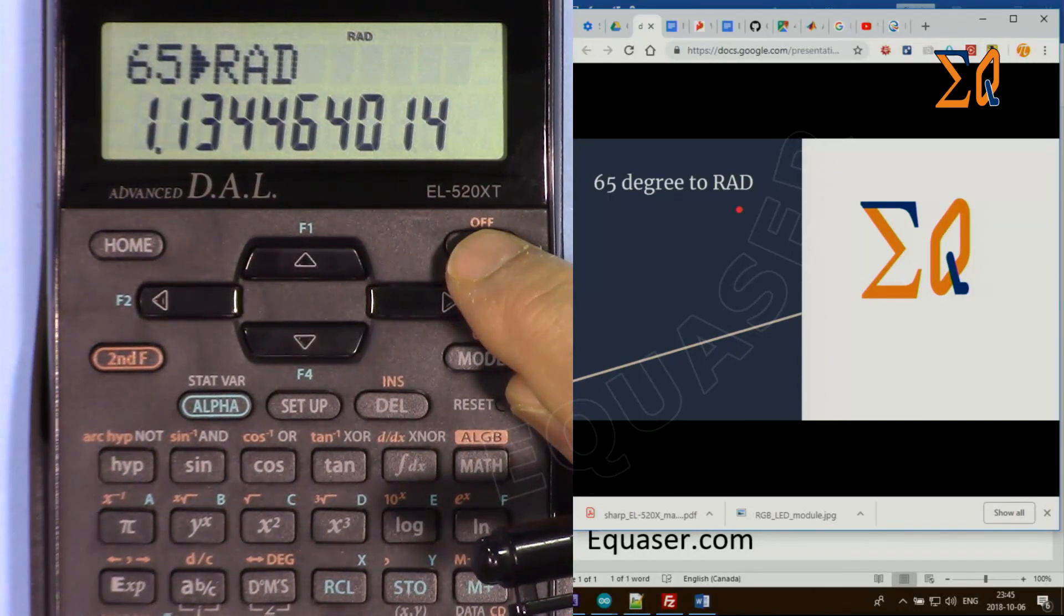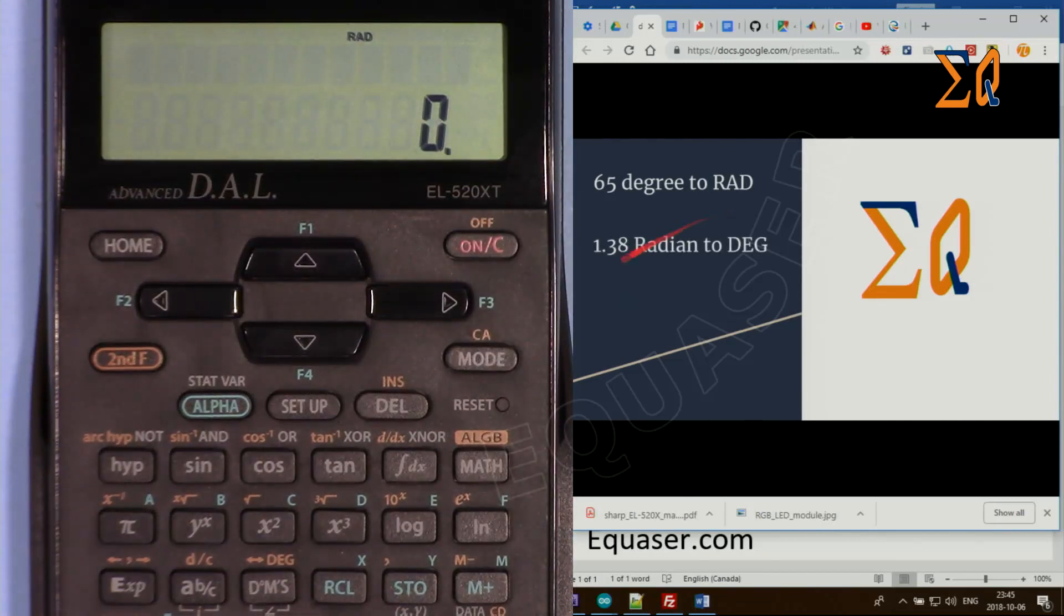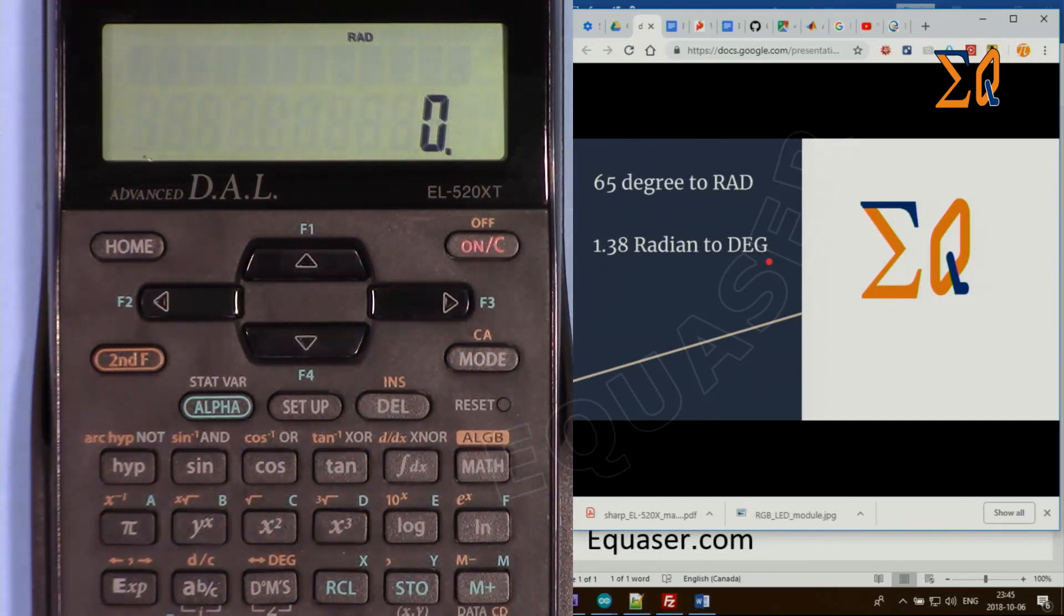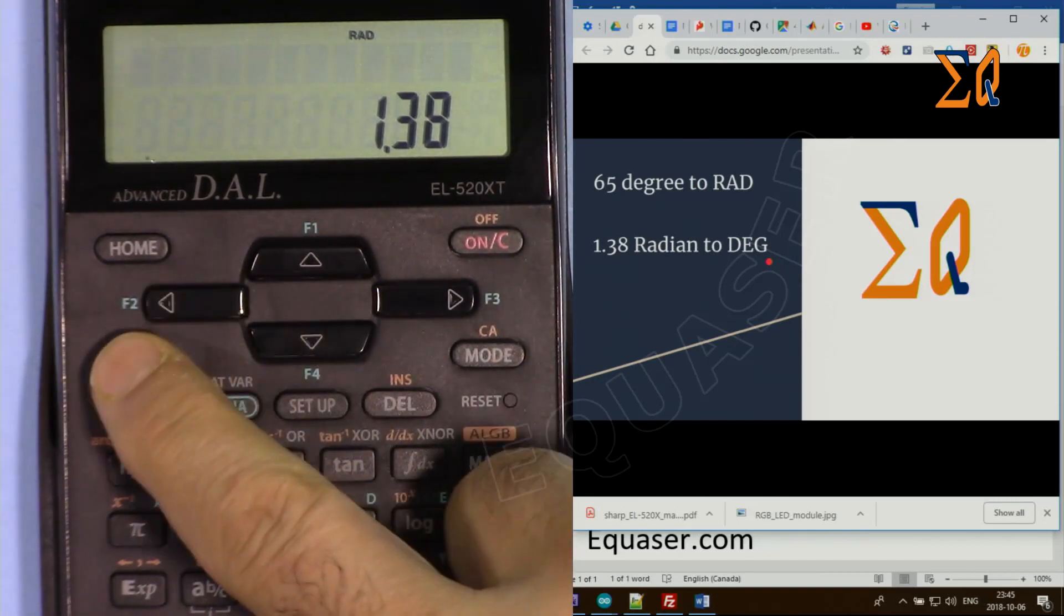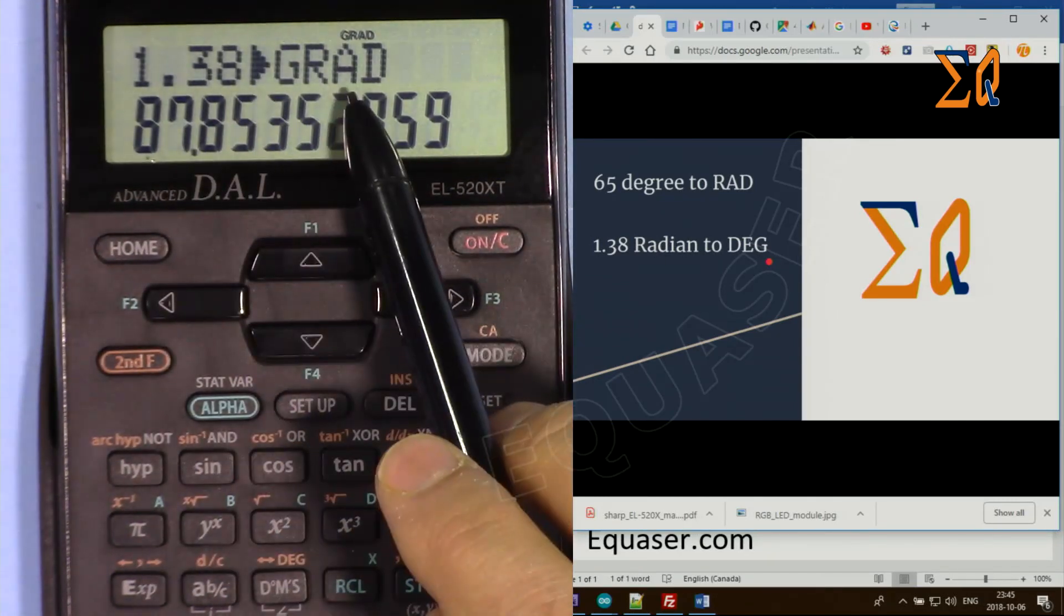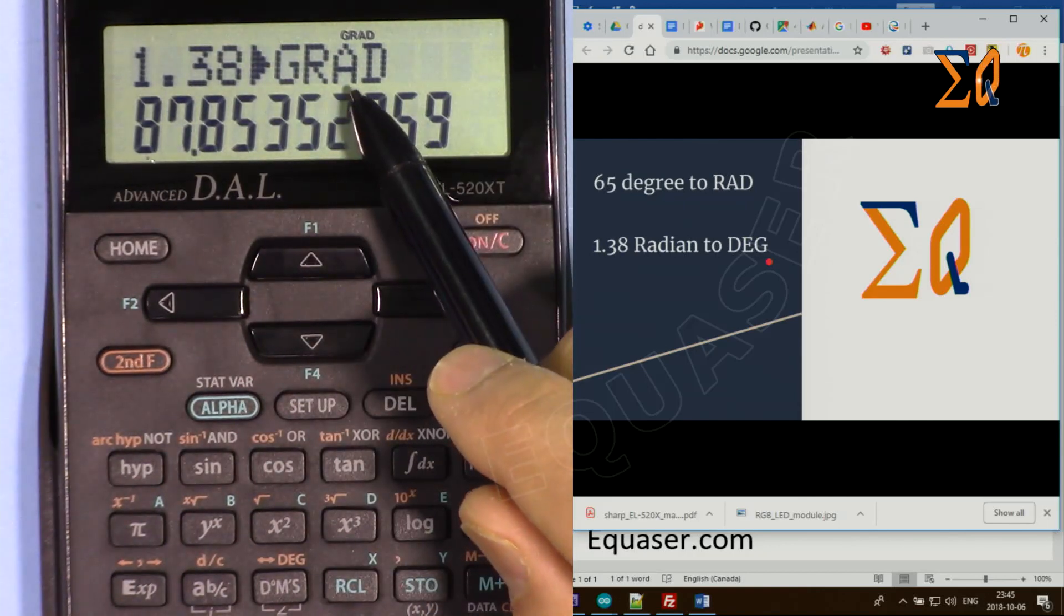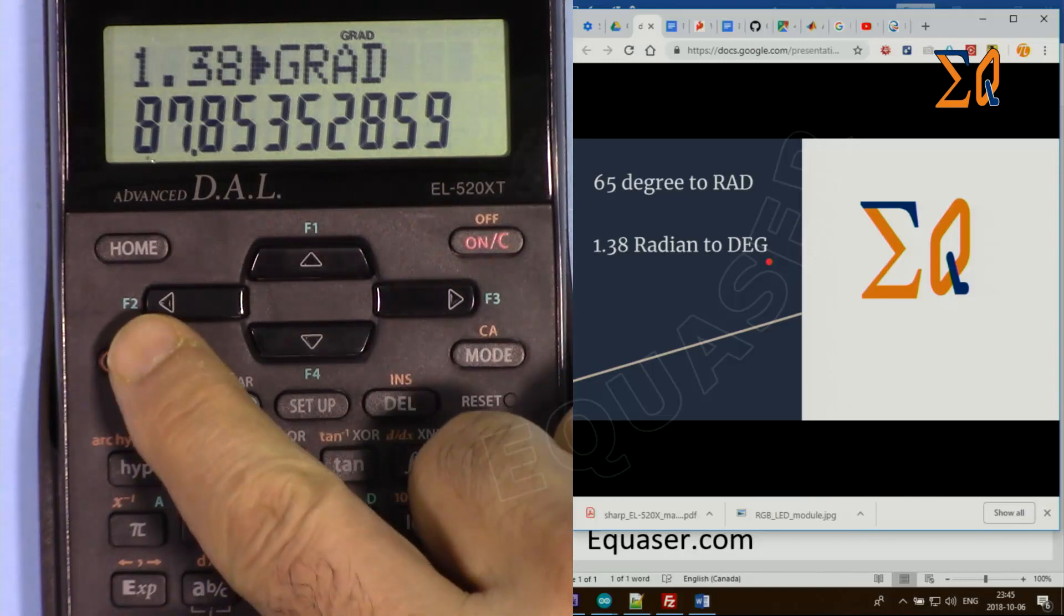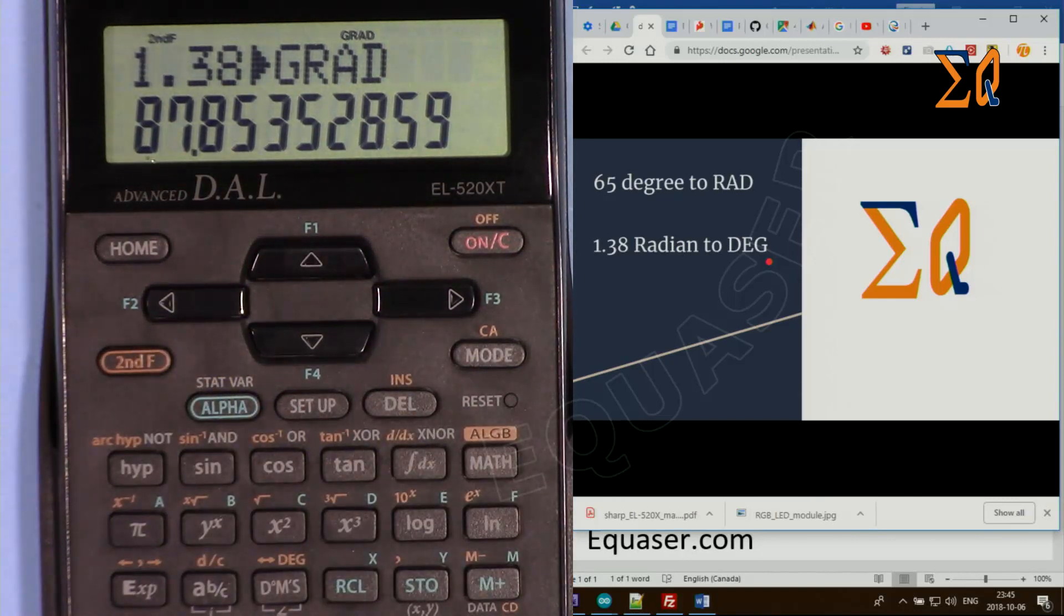Now let's say you want to convert 1.38 radians to degrees. Now it's already in radian mode, so I just enter it: 1.38. And then second function and then the DRG button. Now it has converted to gradient. This is not what I want. I want it in degrees. So press second function again for the second time, DRG, and now the value has been converted, which is 79.06 degrees.